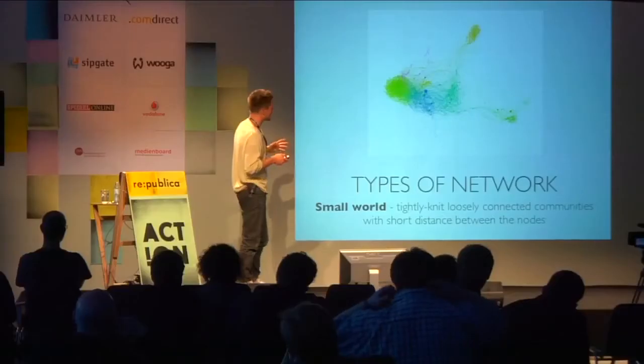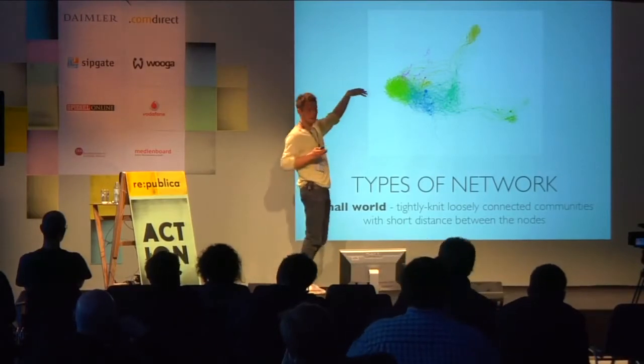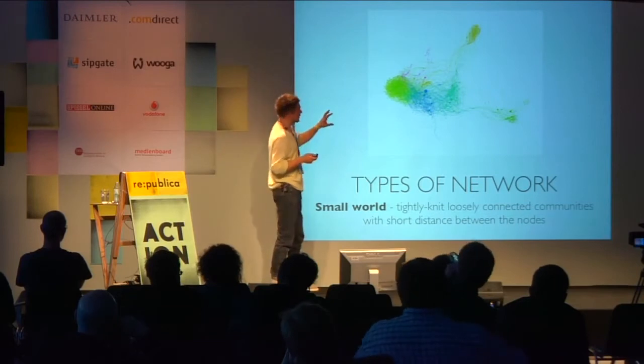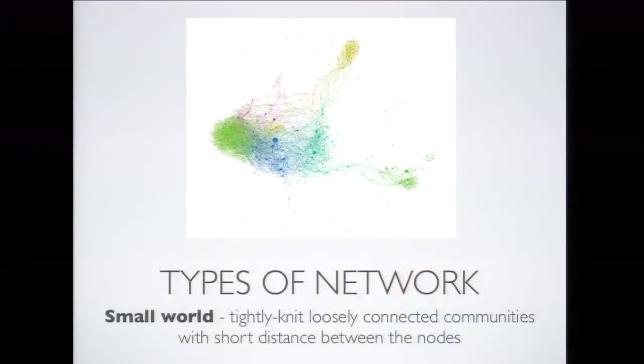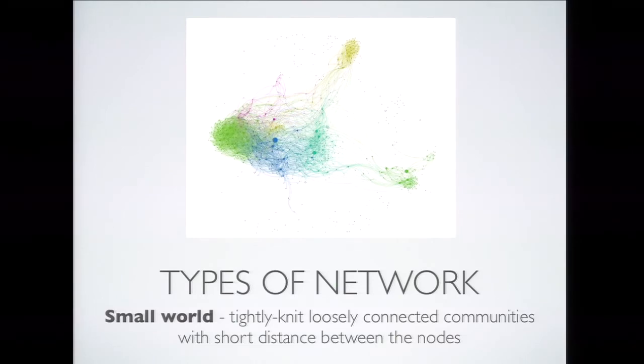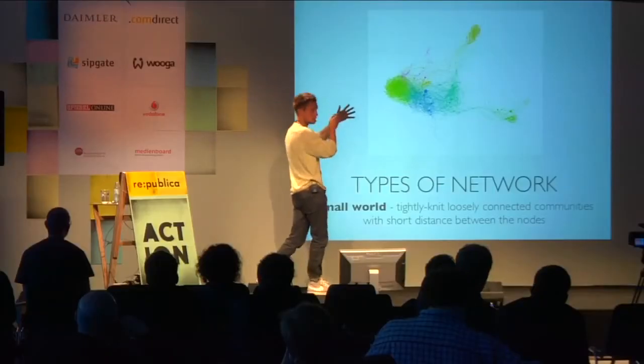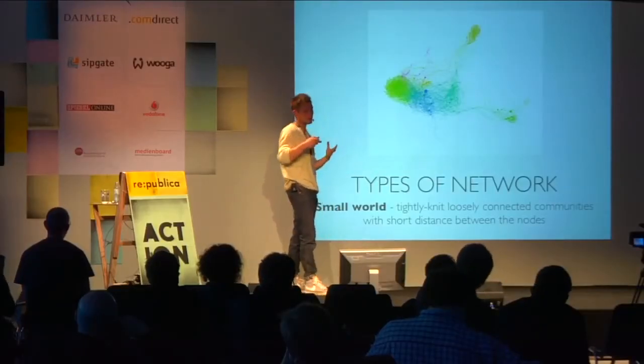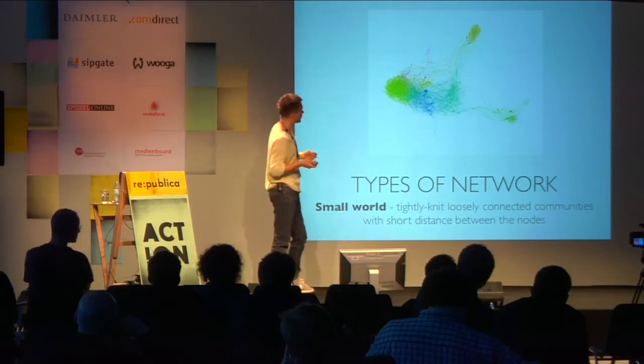Then we also have small world networks, which are very typical for whatever social structures we're involved in — friends, family, and so on. This means we still have a very well-connected network, almost as well connected as the random network, but the community structure inside the network is quite prominent. We have different groups of nodes that are more densely connected together than with the rest of the network — different communities that also interact globally. This is a very typical structure for normal social networks: you have your friends, your family — different groups with weak ties between them that form distinct communities.